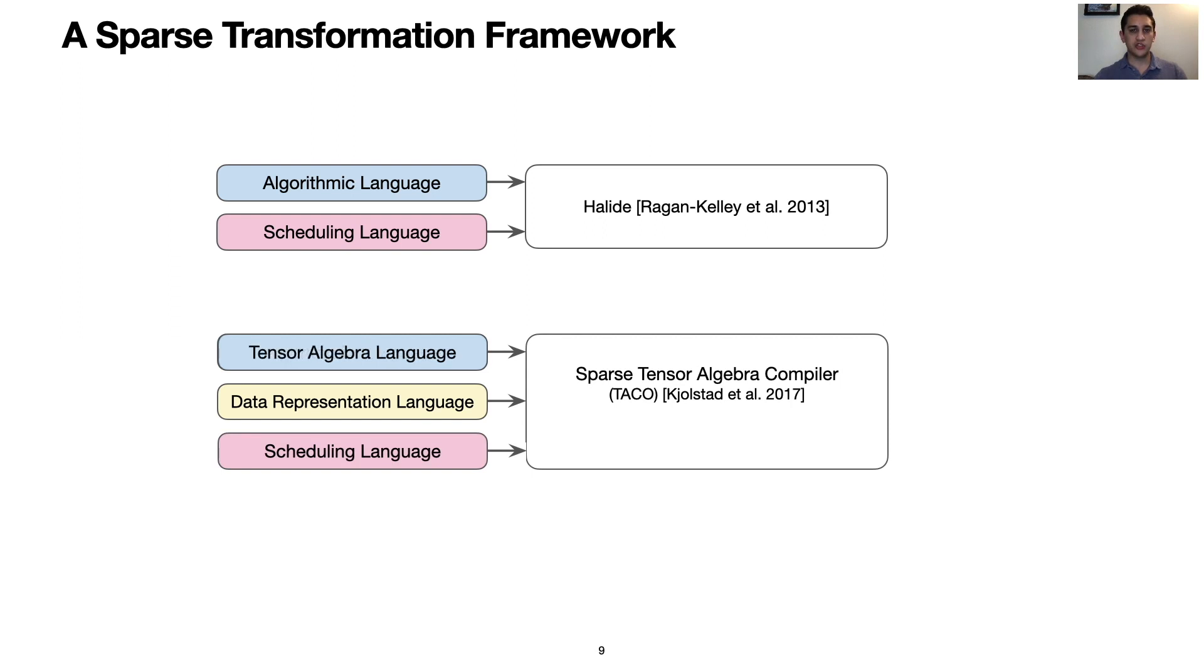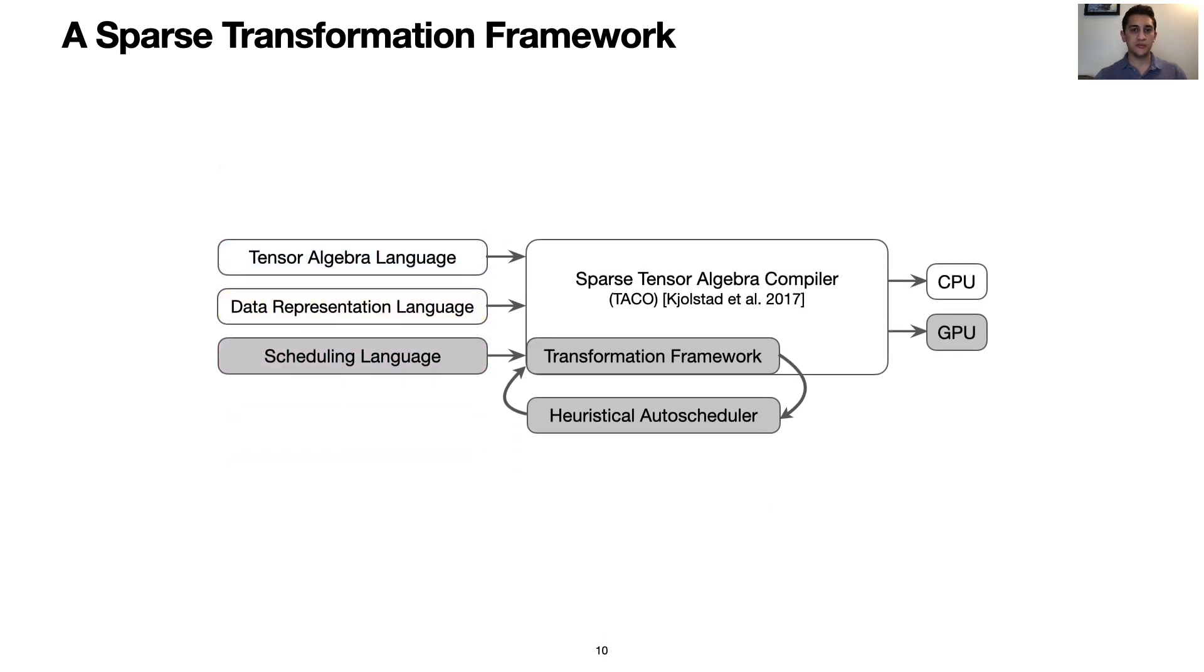We embed our sparse transformation framework within the open source TACO project. This allows for the user to specify optimizations manually through a scheduling language. An auto-scheduler described in the paper also allows for automatically obtaining good default schedules. These sparse transformations in combination with a new CUDA backend allows for us to generate sparse tensor algebra code competitive with hand-optimized implementations on both CPUs and GPUs. Within this final diagram, the highlighted sections depict new contributions of this work.